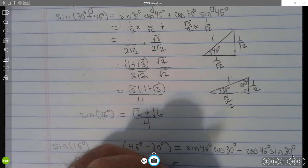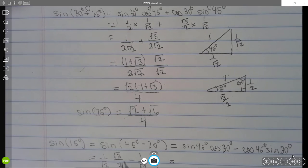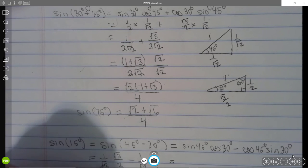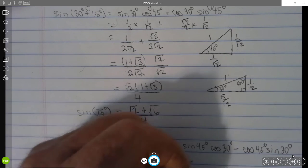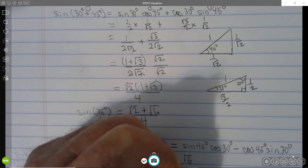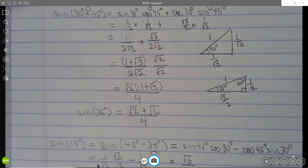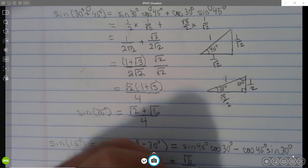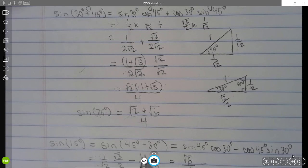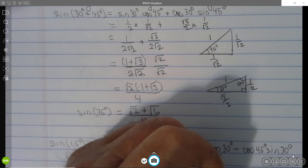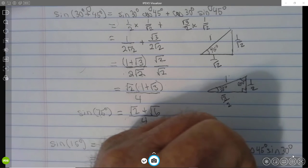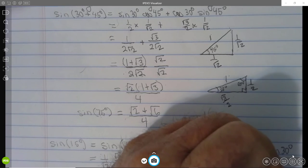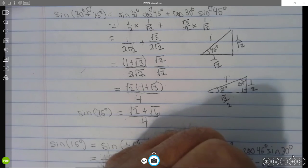And we get something very similar to what we had before, except we're going to be subtracting. So, let's get it over 4 since that works nicely. Multiply up and down by root 2 here, so I have root 6 over, now when I multiply by root 2 here, I have 2 times 2, 4. And here I multiply up and down by root 2. Root 2 over 2 times 2 is 4. So we get root 6 minus root 2 over 4.